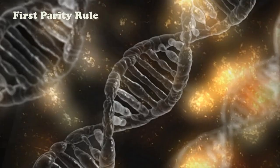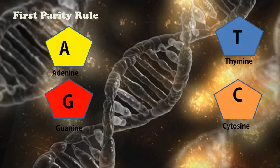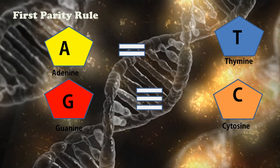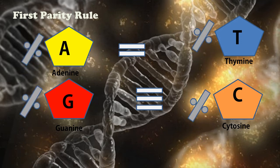Coming to the first parity rule: DNA strands are made up of adenine, thymine, guanine, and cytosine. Adenine base pairs with thymine and guanine base pairs with cytosine. There are two hydrogen bonds between A and T, and three hydrogen bonds between G and C. According to this rule, the percentage of A and T and the percentage of G and C should be one-to-one comparing both strands — so percent A equals percent T, and percent G equals percent C.